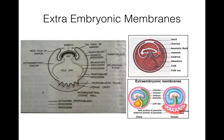Amnion is the innermost fold of somatopleure — inner ectoderm and outer mesoderm — which is present above the embryo. Between the amnion and embryo there is amniotic fluid, secreted by both embryo and amnion. It protects the embryo, acts as a shock absorber, and prevents desiccation. Allantois is a fold of splanchnopleure developed from the hindgut of the embryo. It is well developed in amniotes with polylecithal eggs — reptiles, birds, and prototheria — and acts as an extra embryonic kidney because it stores nitrogenous waste. In eutherians it combines with the chorion to form allantoic chorion, taking part in placenta formation.